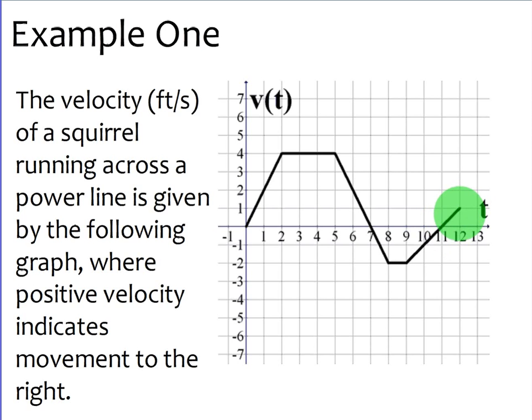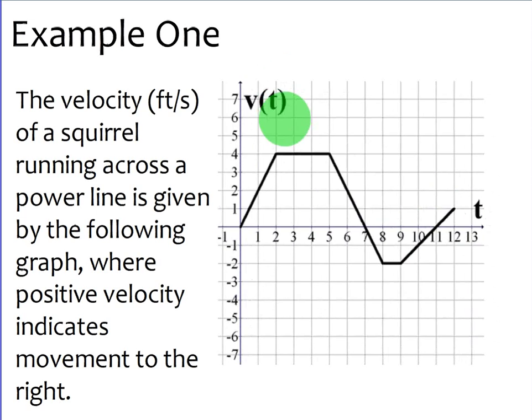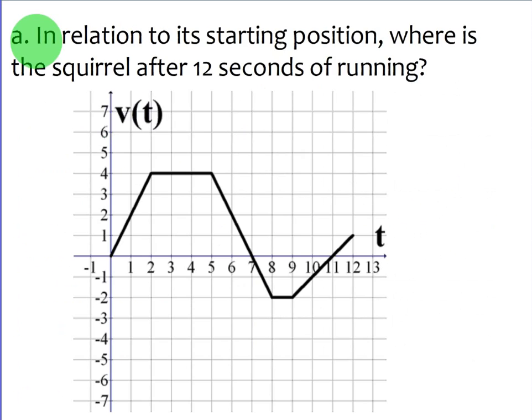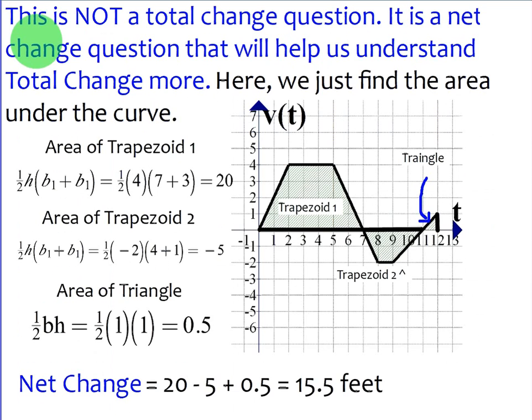So after 11, it starts to move forward again. And at 12 seconds, it's going one foot per second. So all this information we want to use to figure out, A, what's its net change, and B, what's its total distance traveled. So let's take a look at how to do that. Part A, this is just a review. We're going to say, in relation to its starting position, where is the squirrel after 12 seconds of running? So where is the squirrel is asking about displacement. And displacement is just the net change of velocity. Again, this is just a review. We're going to focus today on total change.